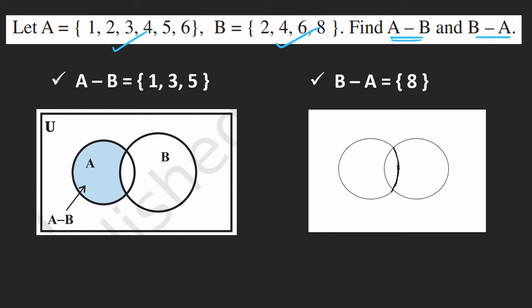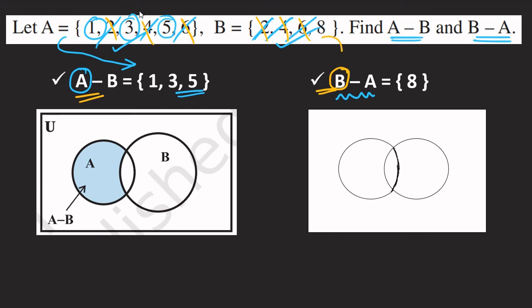Find A - B and B - A. A - B: compare A and B element by element — 2 cancels, 4 cancels, 6 cancels. The remaining elements in A are {1, 3, 5}, so A - B = {1, 3, 5}. For B - A: cancel common elements — 2, 4, 6 cancel. The remaining element in B is 8, so B - A = {8}.